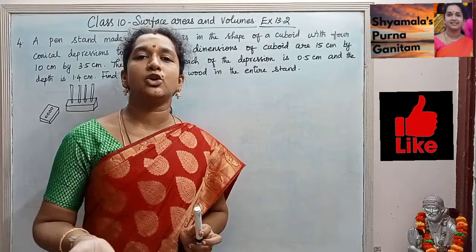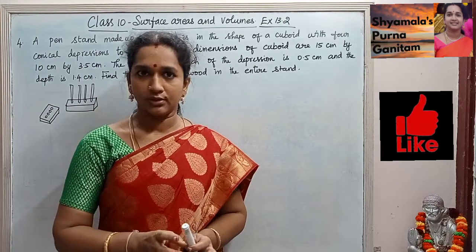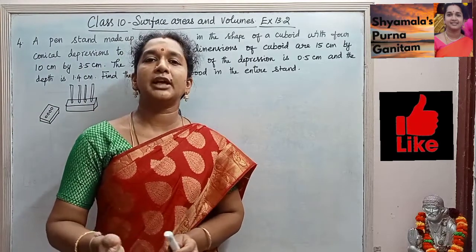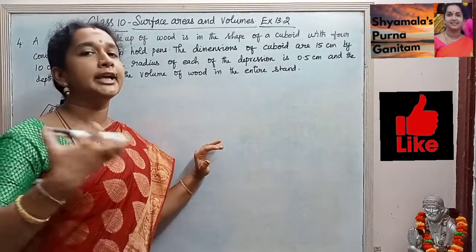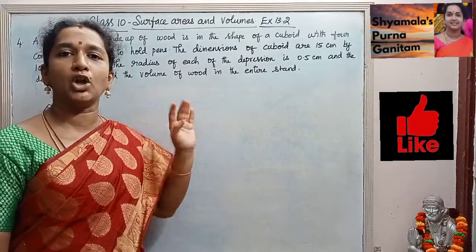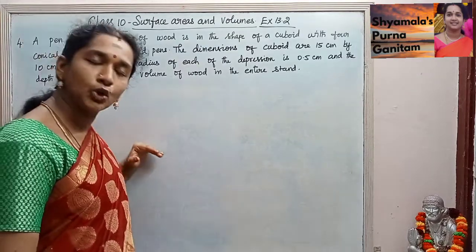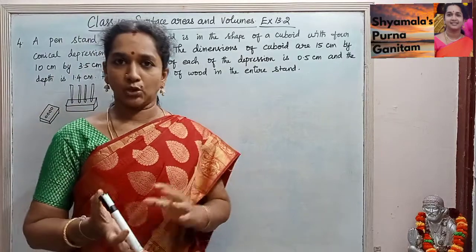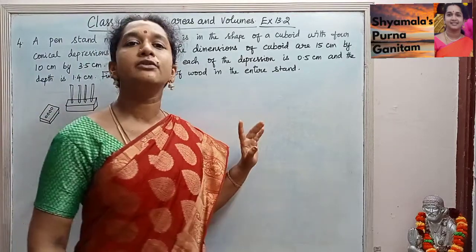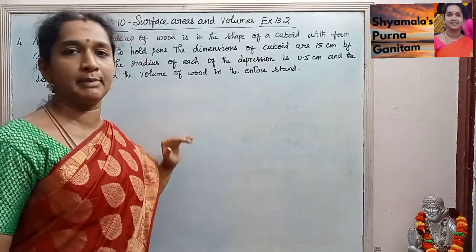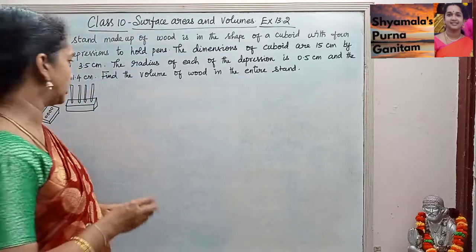So how we are going to find the volume of the entire stand: the volume of the cone formula is pi r squared h. For that radius and height is given, multiplied by 4 we will get the volume of 4 cones. Then volume of the cuboid, and we subtract both — volume of the cuboid minus volume of the 4 cones — we will get the volume of the remaining wood.